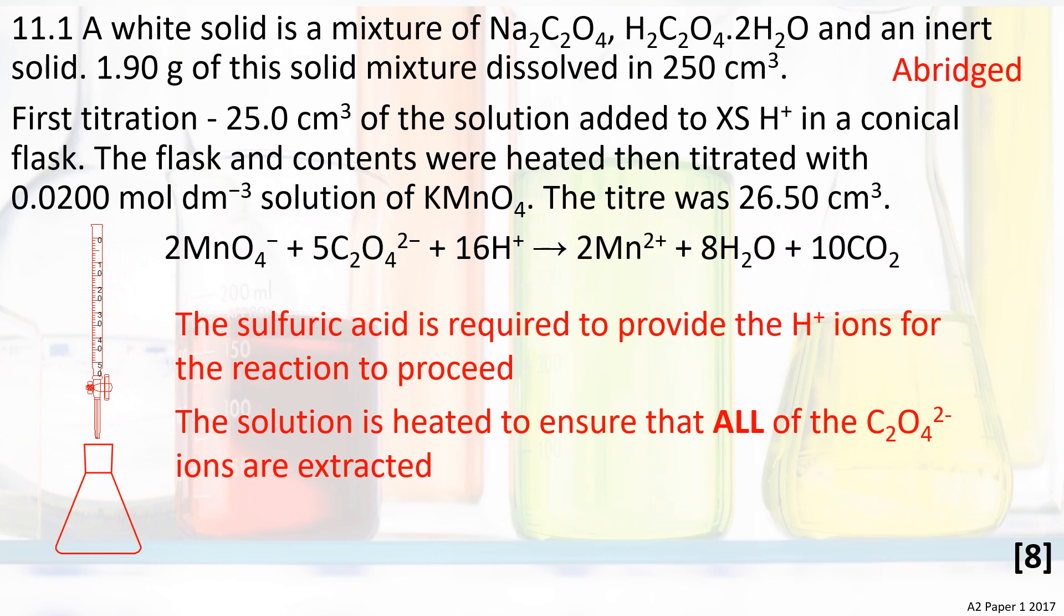One of the skills that you will develop is recognizing the reagents. Potassium manganate(VII) provides the MnO4⁻ ions. The sulfuric acid is added in excess to provide the H⁺ ions needed for the reaction to proceed. The solution is heated in order to extract all of the ethane dioate ions.